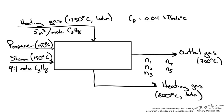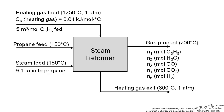Since the schematic is getting cluttered, we redraw it to make it cleaner. We are not given amounts of propane or steam entering, or the amount of gas product leaving — the only amount given is the 5 m³ per mole of propane fed for the heating gas. So we choose a basis for our process: one mole of propane entering.